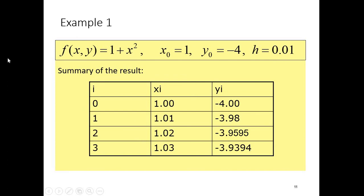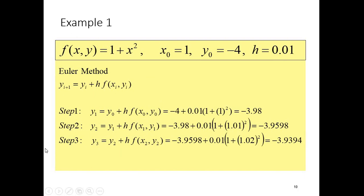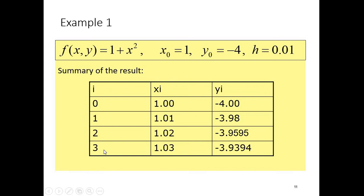You can summarize your information in a table. For i = 0: y = minus 4. For i = 1: x = 1.01, y = minus 3.98. For i = 2: x = 1.02, y = minus 3.9595. For i = 3: x = 1.03, y = minus 3.9394.